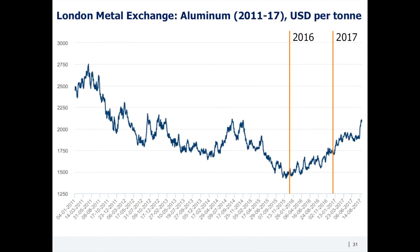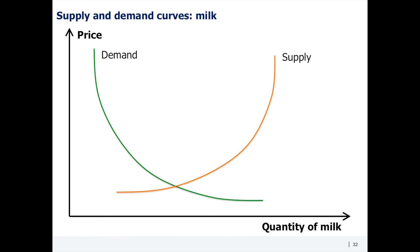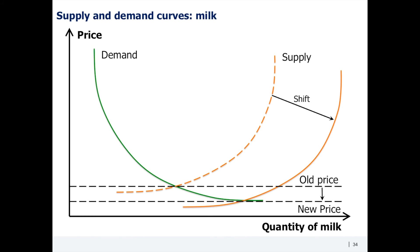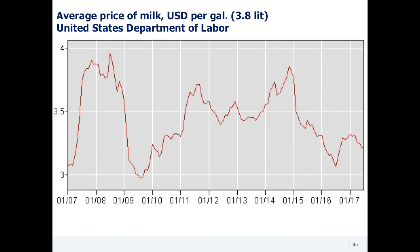The opposite example is offered by milk producers. In 2014, rising milk prices led many dairy firms to invest in capacity. As a result, in 2015–16 there was considerable oversupply — the supply curve moved to the bottom right and the equilibrium price dropped. As shown on the chart, after increasing in 2014, the price dropped off the cliff.